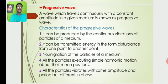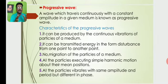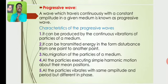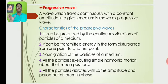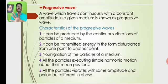The characteristics of progressive waves: it can be produced by the continuous vibrations of the particles of the medium. It can transmit energy in the form of disturbance from one point to another point. During the transmission of energy in the form of disturbance, there is no migration of the particles of the medium, but all particles execute simple harmonic motion about their mid position or equilibrium position.